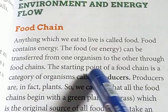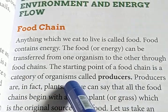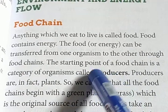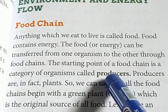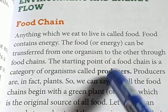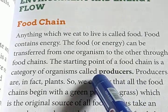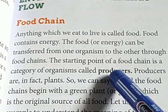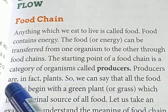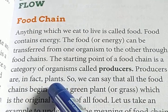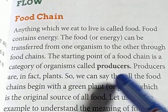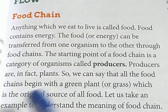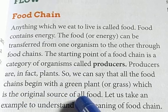The starting point of a food chain is the category of organism called producers. Producers are the main source of energy. They produce the food and we depend upon them directly or indirectly. Producers are in fact plants. So we can say that all food chains begin with green plants, which are the original source of all food.